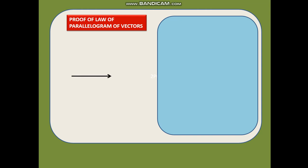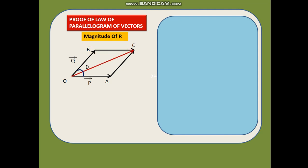Let us consider a standard parallelogram with two vectors P vector and Q vector represented by OA and OB. So OA is P vector and OB is Q vector. Now we complete the parallelogram. The angle between them is theta, and we have the resultant R vector equal to P vector plus Q vector.